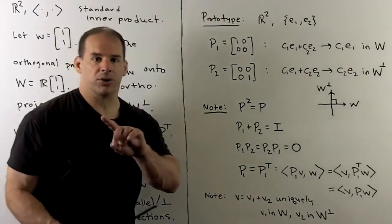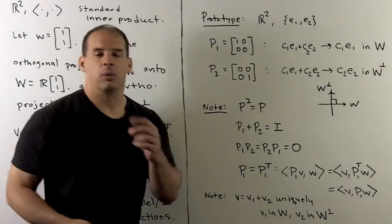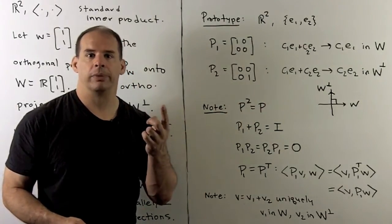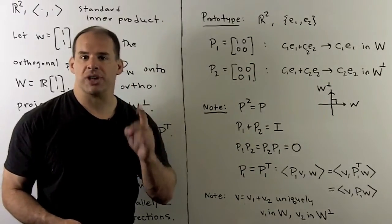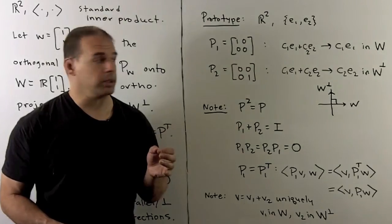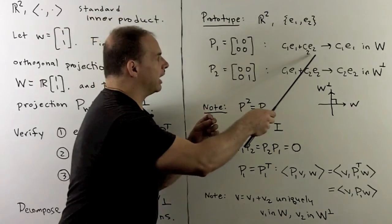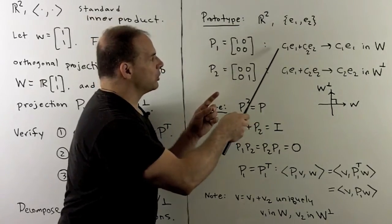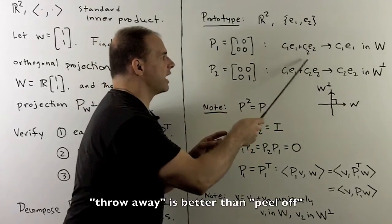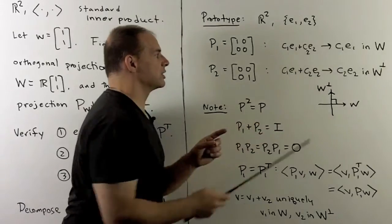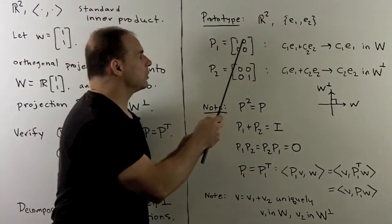Our motivating prototype: we have R² with the standard basis and consider the projections along E1 and E2. If E1 represents our subspace W, then E2 represents the orthogonal complement of W. If we want the projection onto the part in the direction of E1, we just peel off the second piece, giving C1·E1. In matrix form, that gives us the matrix with entries 1, 0, 0, 0.